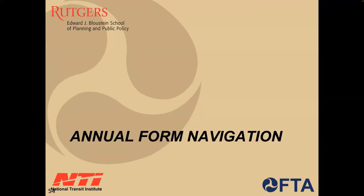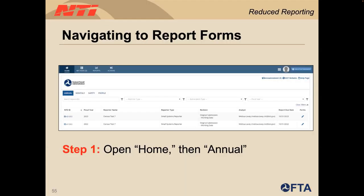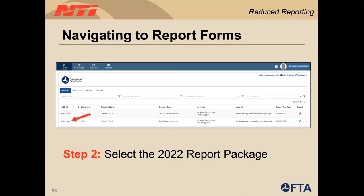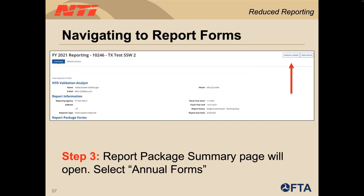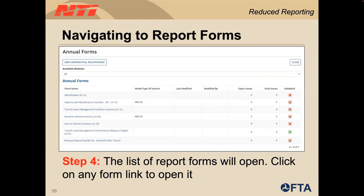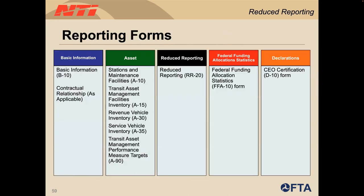To access your RY22 report package, first select home at the top of the page, then annual. Do not select the 2023 report package as this is the wrong reporting package for this year's NTD report. You will then select the ROI 2022 report package link. Once the report package summary page opens, select annual forms in the top right-hand corner. This will open a list of report package forms, and you can select any form link to open whichever form you plan on working on.